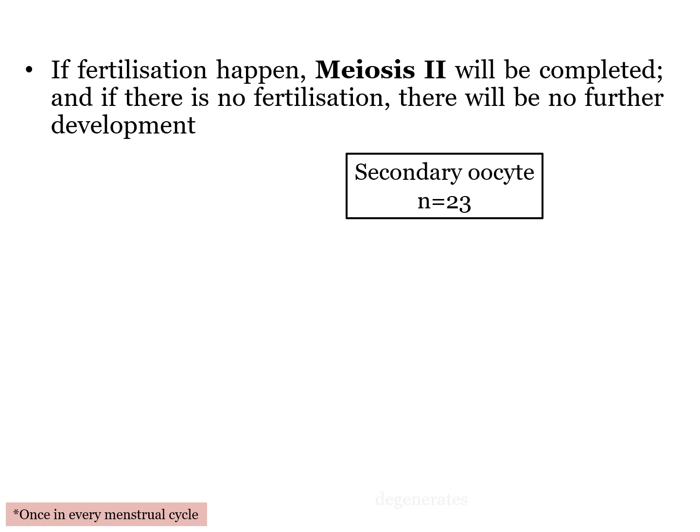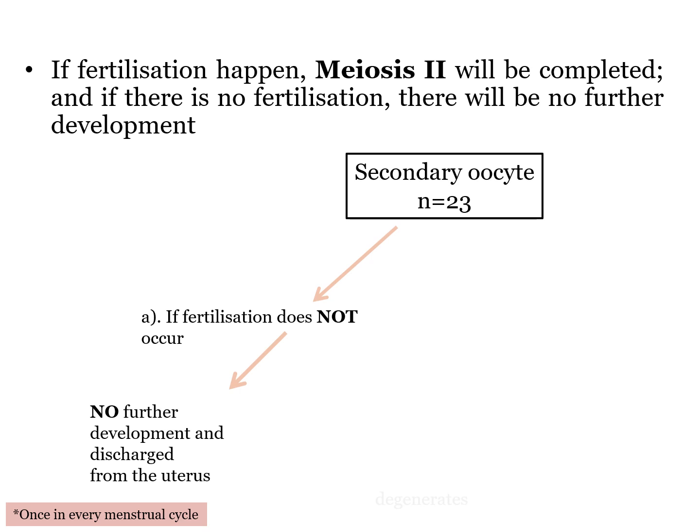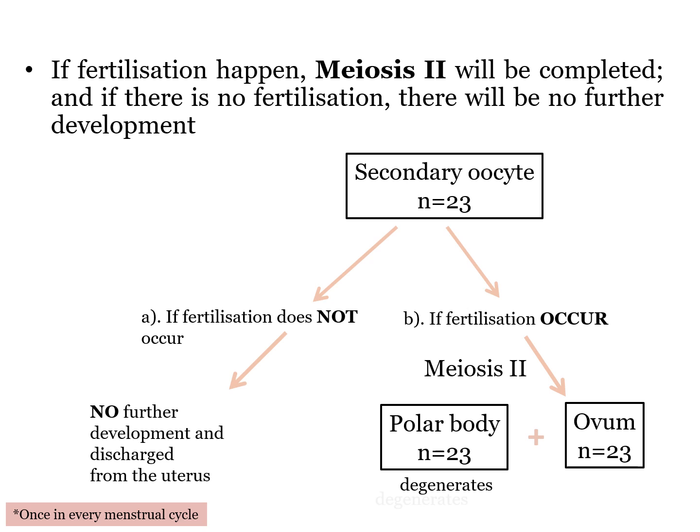The released secondary oocyte will either continue with meiosis II or not, and this is determined by whether there is fertilization. If there is no fertilization, there will be no meiosis II and no further development will take place. The secondary oocyte can only live within 24 hours after ovulation, so if there is no fertilization, it will be passed into the uterus as an immature egg and discharged during menstruation. On the other hand, if there is fertilization, meiosis II will be completed. It will produce an ovum — which is the fertilized secondary oocyte — and also a polar body. Similarly, the polar body degenerates.